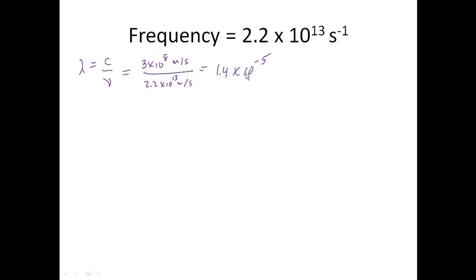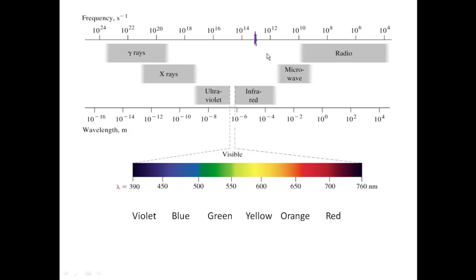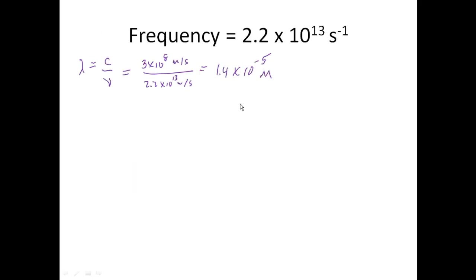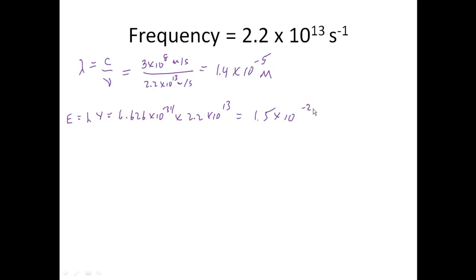And that is wavelength — in meters. So 1.4 times 10 to the minus 5th meters. You'll notice it is down here on the chart, so that looks like infrared. Our numbers work — we're doing the right thing. Let's take care of our energy. Our energy is equal to Planck's constant times the frequency, so that's 6.626 times 10 to the minus 34th times 2.2 times 10 to the 13th. And that will give us an answer of 1.5 times 10 to the minus 20th joules — a very small amount of energy.